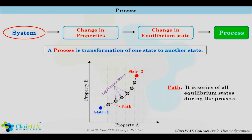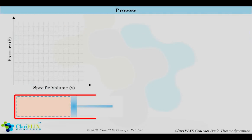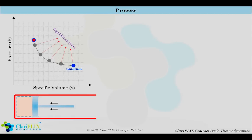Important things to note about a process are: the initial state of the system, the final state of the system, the path of the system, and how the system interacts with the surroundings. Consider a piston-cylinder device with the initial state marked on the PV diagram at equilibrium. If we push the piston very slowly, it will attain many equilibrium points and finally reach the final state at equilibrium. During this process, pressure increases and specific volume decreases. This very slow process is called a quasi-static process.